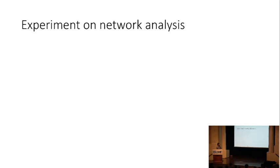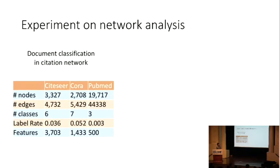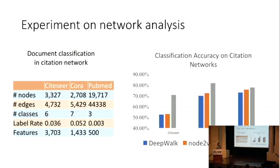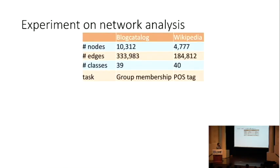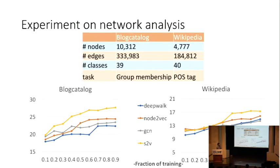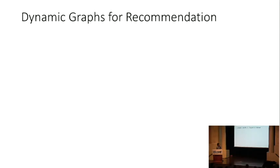We apply this approach to some document classification in the citation network, where we outperform some unsupervised embedding methods like the node2vec or DeepWalk. Also, some benchmark datasets on the social network and the Wikipedia dataset regarding the F1 score here.